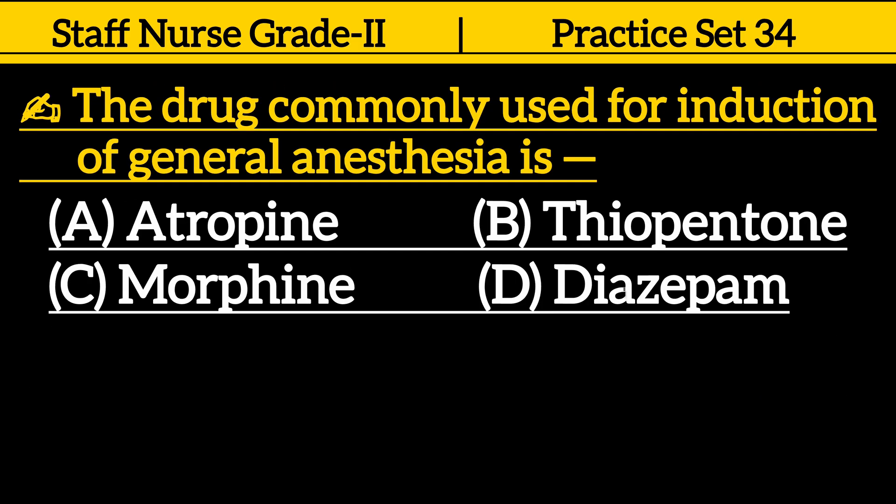Next one is, the drug commonly used for induction of general anesthesia is: option A. Atropine, option B. Thiopentone, option C. Morphine, option D. Diazepam.